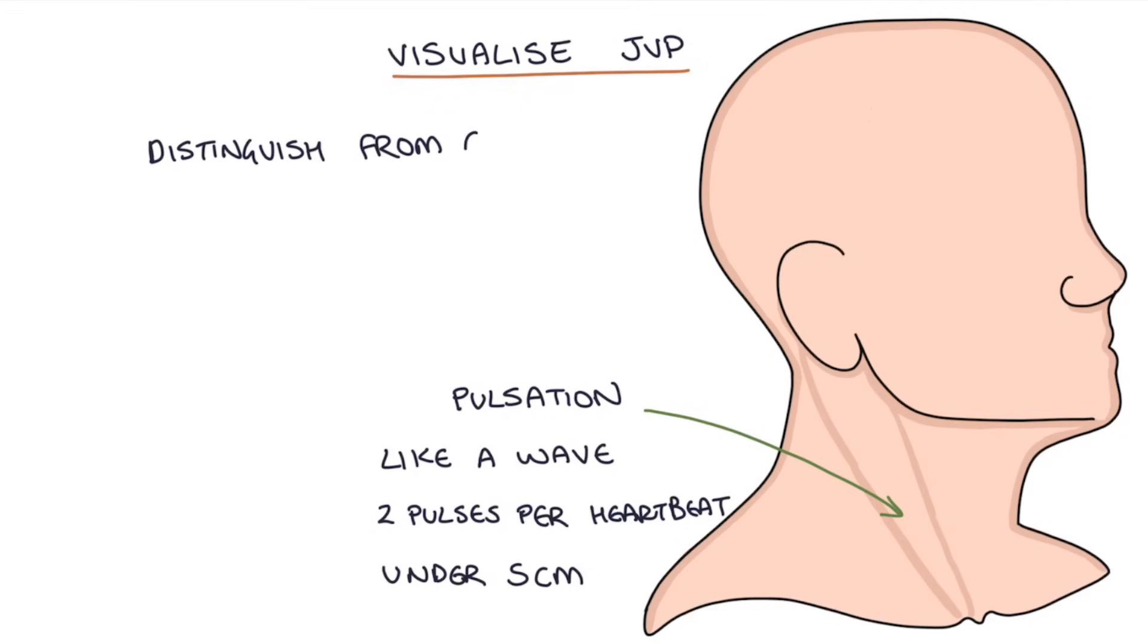You can distinguish it from the carotid pulse in two ways. Firstly, because it has two pulses for each beat of the heart, so it will have twice the number of pulses as the carotid pulse. You can also try to feel it with your fingers - a carotid pulse will have a pulsation that you can palpate, whereas a JVP won't give you a palpable pulsation, so you won't be able to feel anything with your fingers.